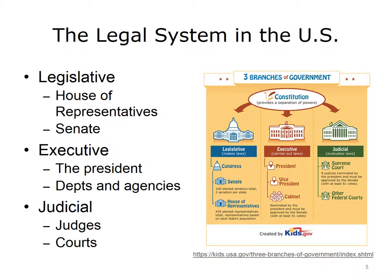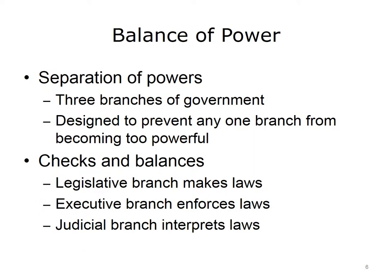At the federal level, the legislative branch consists of the House of Representatives and the Senate. The President of the United States is the head of the federal executive branch, which includes numerous departments and agencies, such as the Department of Labor and the Department of Health and Human Services. The federal court system includes local federal district courts, district courts of appeals, and the U.S. Supreme Court. The division of the government into three branches is known as the separation of powers.